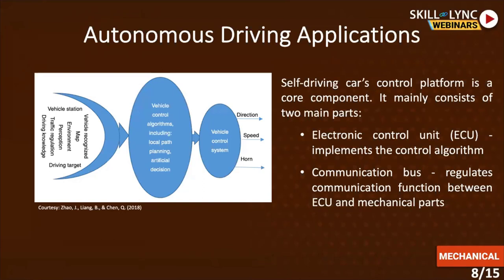The two main parts of the control component are the ECU, which implements the control algorithm, and the communication function between the ECU and the mechanical parts such as actuators. The communication bus communicates the control parameters to the mechanical parts. The various sensor parameters in the diagram affect the control algorithm — they provide the algorithm with knowledge about its surroundings, the environment it is working in, and what the vehicle is doing. Based on that knowledge and the objectives for the vehicle — say, reaching a certain destination and following a certain path — the direction and speed are the parameters which can be controlled.